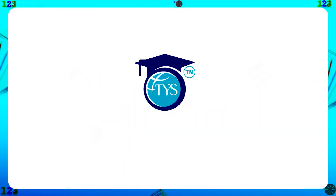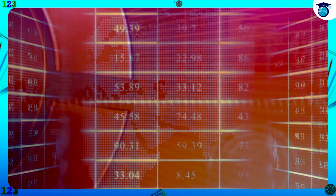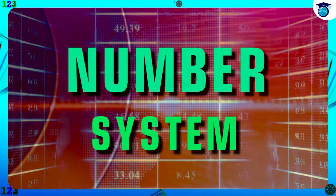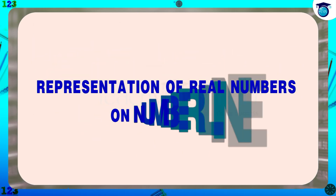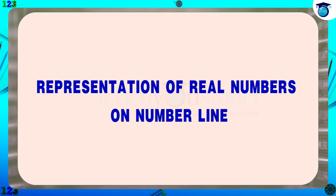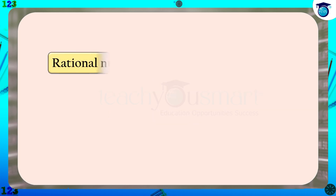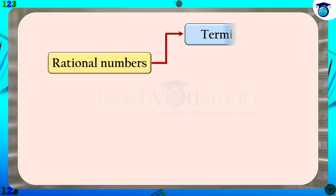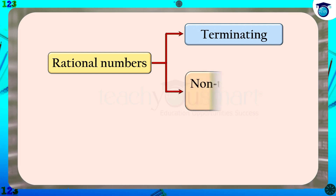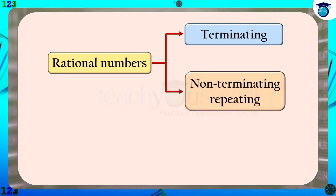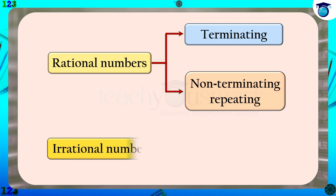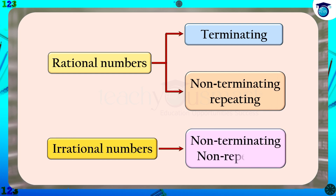Hello students, welcome to Teach You Smart. Let's continue our journey through number system. Today we will discuss the representation of real numbers on a number line. We know that every real number has a decimal expansion. Rational numbers are either terminating or non-terminating repeating, while irrational numbers are non-terminating non-repeating.